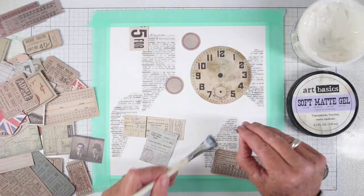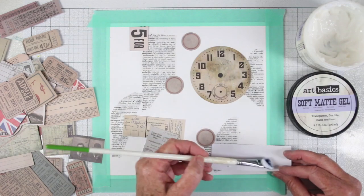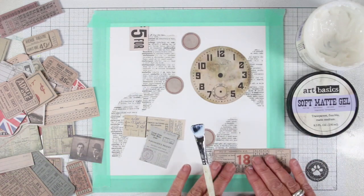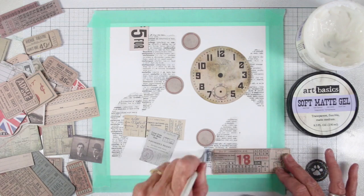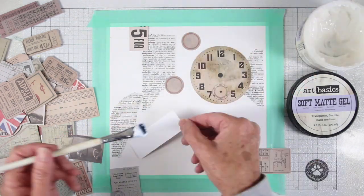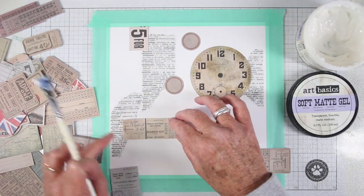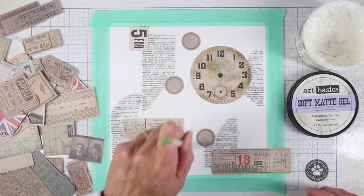I'm just gluing down my little pieces. I kind of arranged them in the beginning if you saw that, and now I'm just placing them back on. I'm adding some of the matte gel to the back of the paper, also to the watercolor cardstock, and then I'm running my brush back over the top just to seal that up.